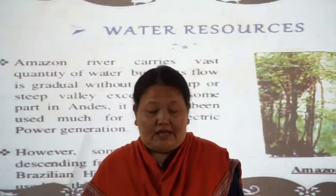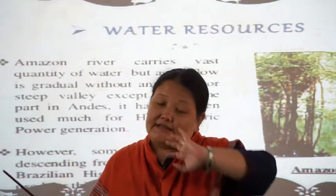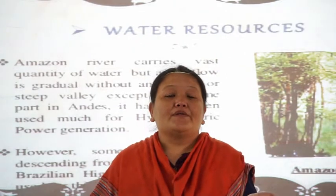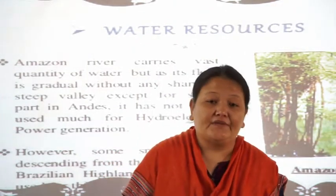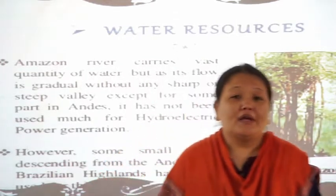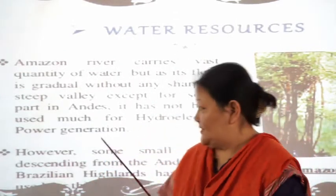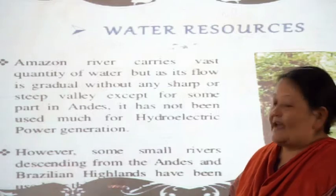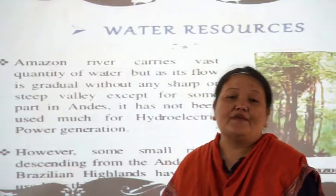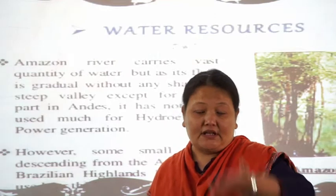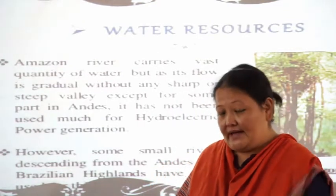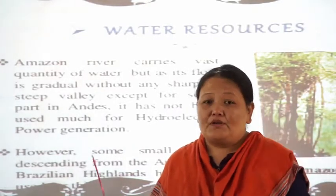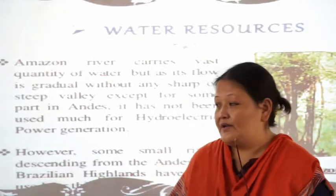Since the river Amazon has a large volume of water but does not have many waterfalls, the flow of the river is not very fast — that means the speed of the river Amazon is not very fast — so it cannot be used for generation of hydroelectricity. However, there are some small rivers descending from the Andes and Brazilian highlands that have been used for generation of hydroelectricity, since they fall from a height.